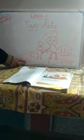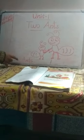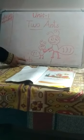Then write unit one: two ants. Then draw two ants. Then write ants — A-N-T-S. All of you say the spelling of ants: A-N-T-S. Thank you.